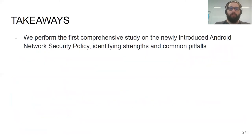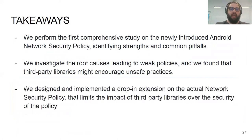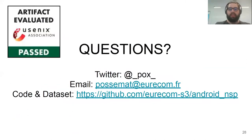To conclude, we performed the first comprehensive study on the newly introduced Android network security policy. We found common pitfalls that might occur during its configuration, investigated root causes leading to weak policies, and found that third-party libraries may actually encourage unsafe practices. As a last contribution, we implemented a drop-in replacement for the actual network security policy that limits the impact of third-party libraries on the security of the application policy. All code and datasets will be available on GitHub after the presentation.